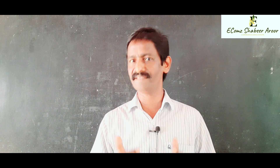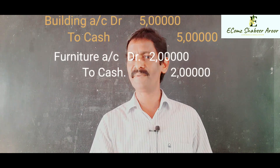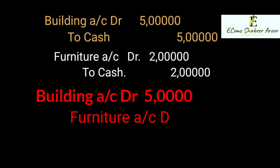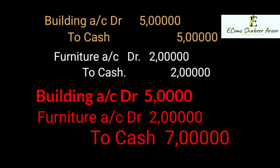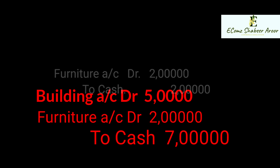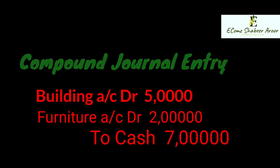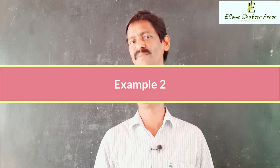Finally, building debited 5 lakh, furniture debited 2 lakh, and cash credited 7 lakh. This is the compound journal entry.